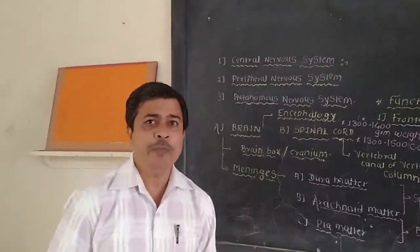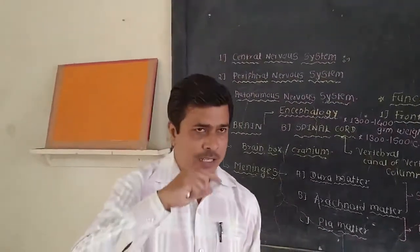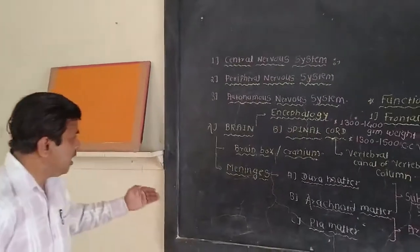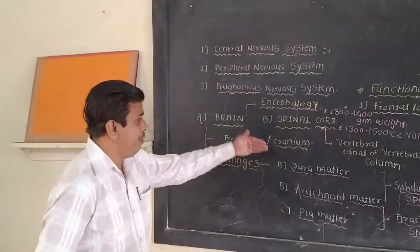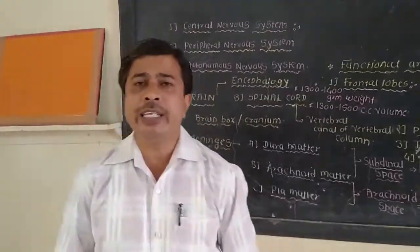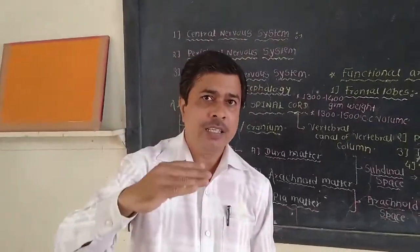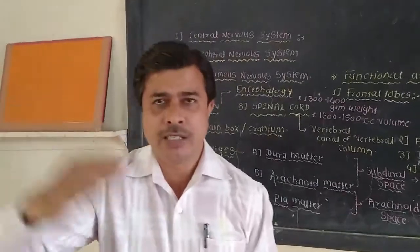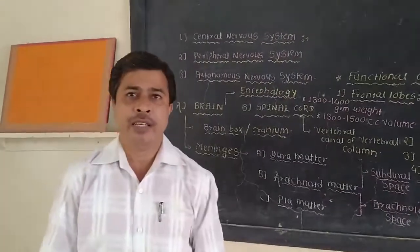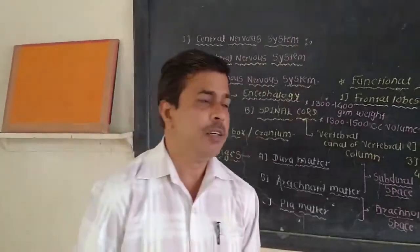These protective membranes are known as the meninges — singular: meninx. There are three such membranes. The first is the dura mater. The dura mater is the outermost protective membrane, present inside the skull. It is a thick and fibrous membrane, protective in function, and it protects the brain.